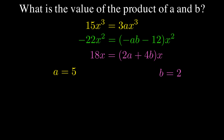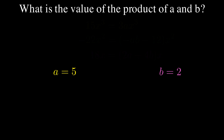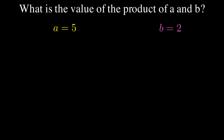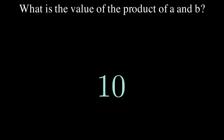Now that I know A is 5 and B is 2, if I want to find the product of A and B — well, that just means multiply. So I'm going to take that 5 and that 2, multiply them, and just like that I have found that my answer is 10.